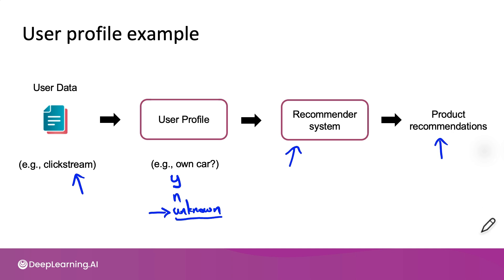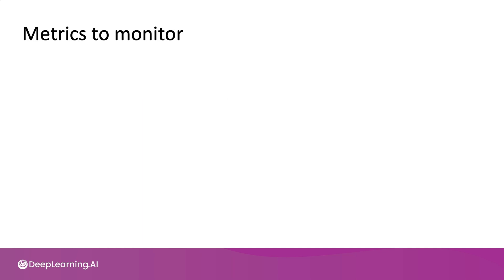When you have machine learning pipelines, these cascading effects can be complex to keep track of. But if the percentage of unknown labels does go up, this could be something you'd want to be alerted to, so that you can update the recommender system if needed and continue to generate high quality product recommendations. When building these complex machine learning pipelines — which can have machine learning based or non-machine learning based components — it's useful to brainstorm metrics to monitor that can detect changes including concept drift or data drift at multiple stages of the pipeline.